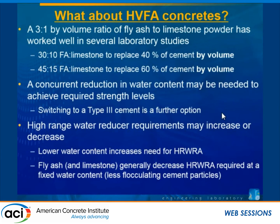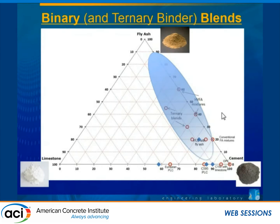Moving on, we look at using limestone in high-volume fly ash mixtures. In our first set of studies, we replaced 40 or 60% of the cement with a 3-to-1 by volume mixture of fly ash and limestone. In the second set, we targeted a certain strength by switching to Type 3 cement or reducing water content, and played with high-range water reducer dosage to further increase cement replacement and target a more moderate slump.